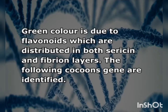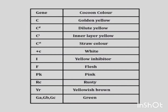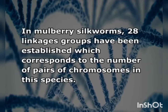The following cocoon genes have been identified: gene C gives golden yellow color; CD gives dilute yellow; CI gives yellow color for the inner layer; CST gives straw color; plus-C gives white color; gene I is a yellow inhibitor; gene F gives flesh color; gene PK gives pink color; gene RC gives rusty color; gene YR gives yellowish brown; and genes GA, GB, and GC give green color to the cocoon shells. In mulberry silkworm, 28 linkage groups have been established, corresponding to the number of chromosome pairs in this species.